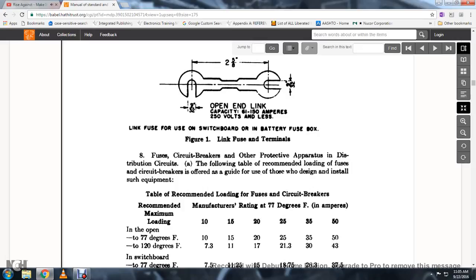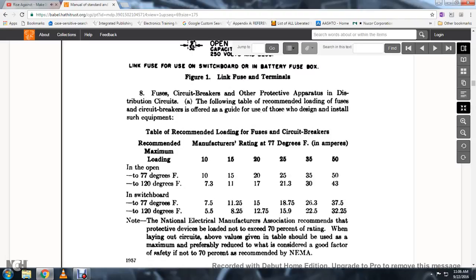Fuses and Circuit Breaker: The following table shows recommended loading of fuses and circuit breakers as a guide for those who design and install such equipment. The table shows recommended loading speeds with manufacturer rating at 75 degrees Fahrenheit: 10, 15, 20, 25, 35, and 50. Values for open 75, 77 degrees to 120 degrees, and switchboard 77 to 120 degrees are provided. The electrical manufacturers association recommends protective devices located not exceeding 70% of the rating when laying out circuits. The values in the table should be used as maximum, preferably reducing by what is considered a good safety factor, if not 70% of the recommended NEMA.